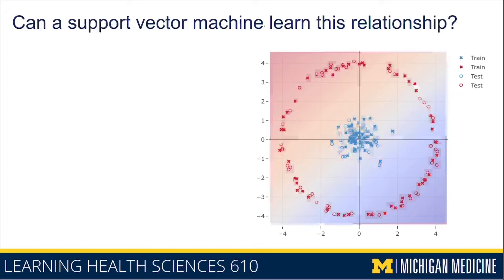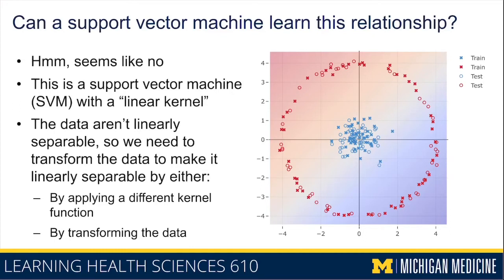What about a support vector machine? In its simplest form it resembles a logistic regression model. With a linear kernel, it predicts anything in the bottom right as healthy and top left as unhealthy — which looks totally wrong. That's because the data aren't linearly separable. So to learn a curve, we either need to change the linear kernel, which is an option inside the SVM model, or transform the underlying data.